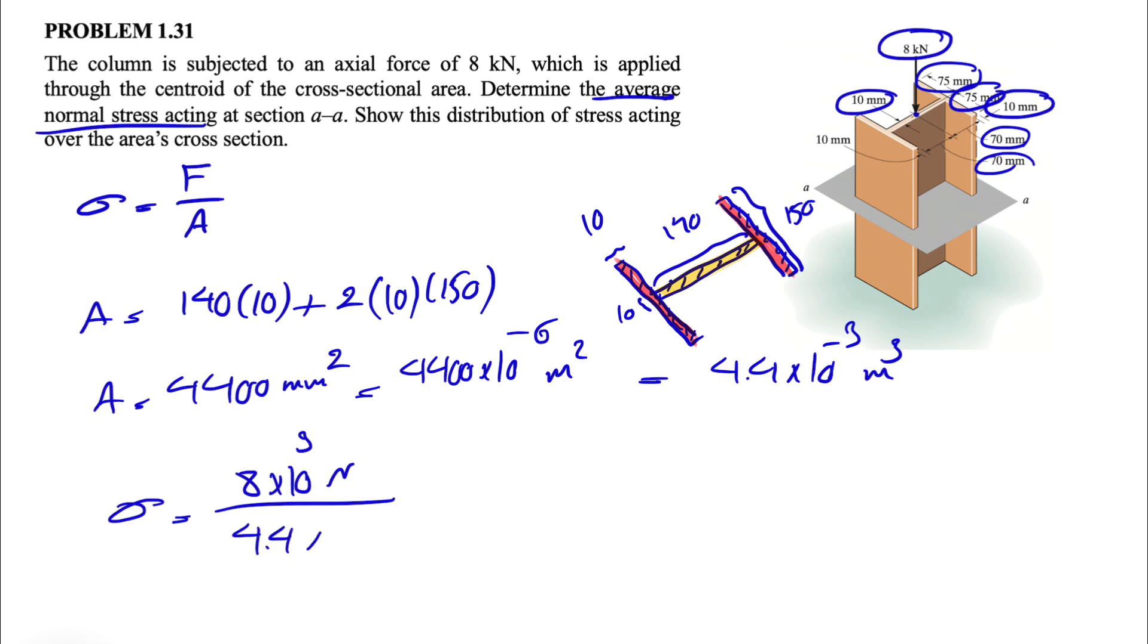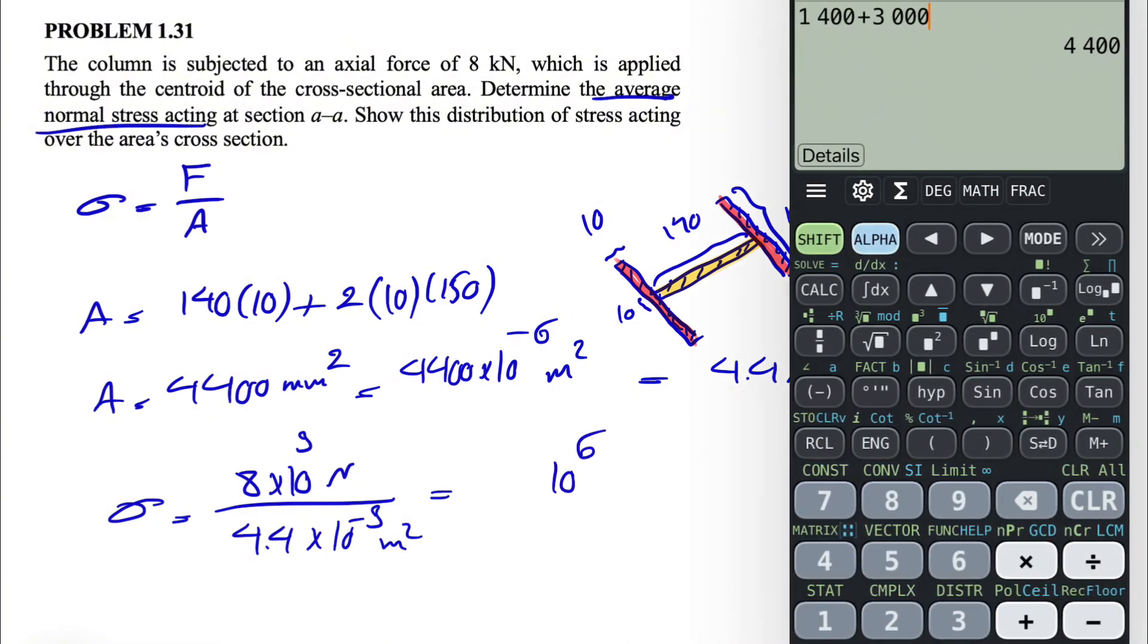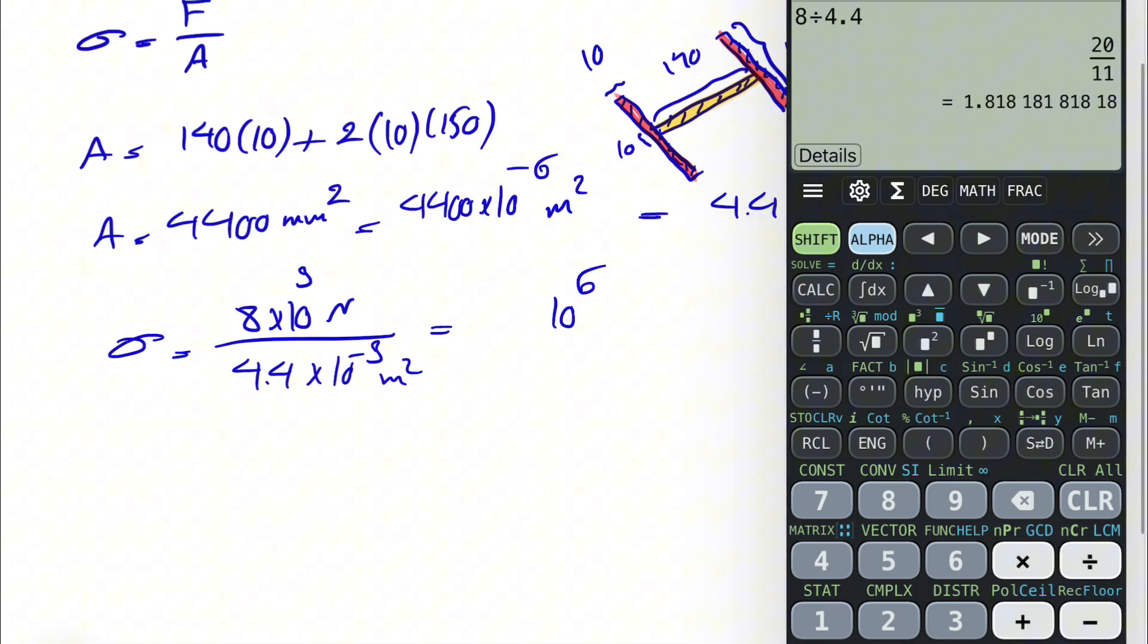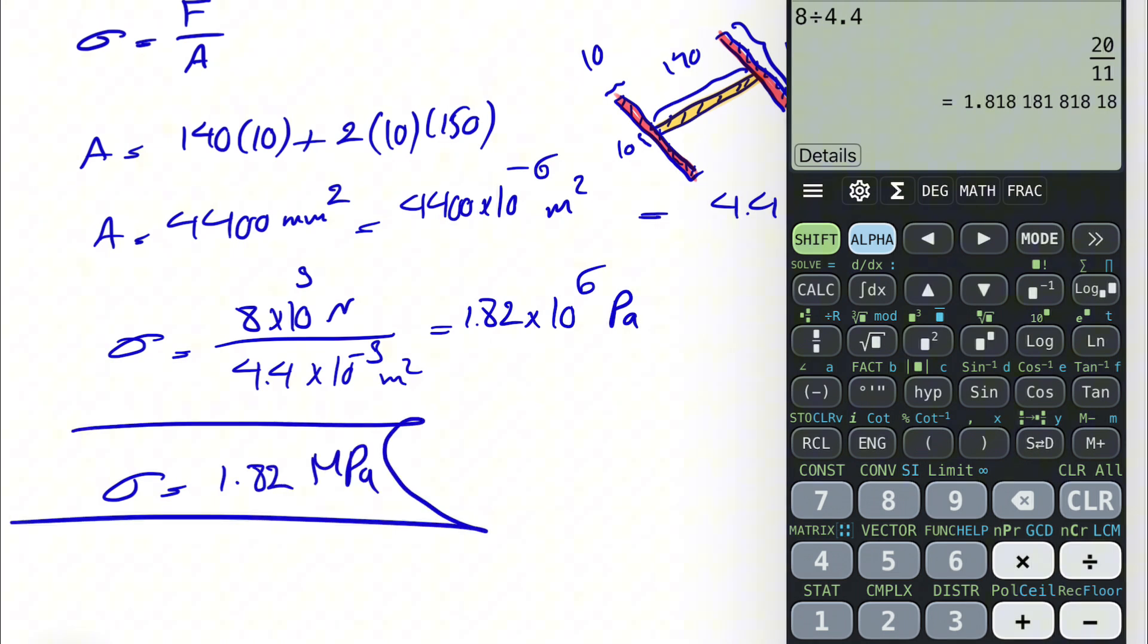And here we have 4.4 times 10 to the minus 3, that's going to be in meters squared. And that's going to give us the stress in Pascals. So we have 10 to the 3 and 10 to the minus 3, that's 10 to the 6, we just have to do 8 divided by 4.4. And if we calculate that, we're going to get 1.82 times 10 to the 6 Pascals or 1.82 megapascals, and that's the answer for this question.